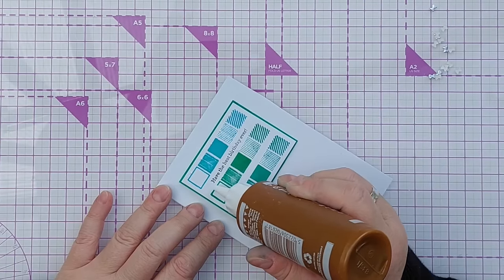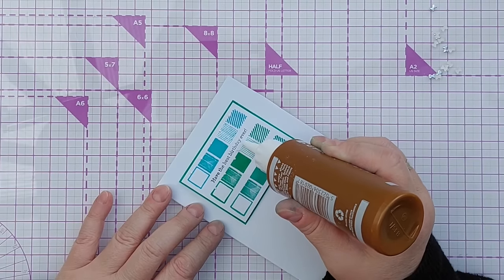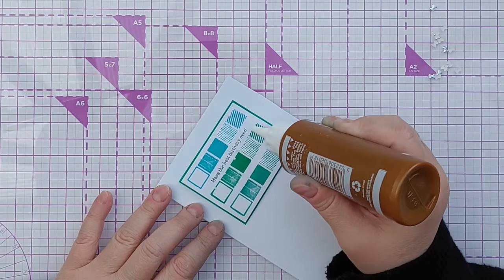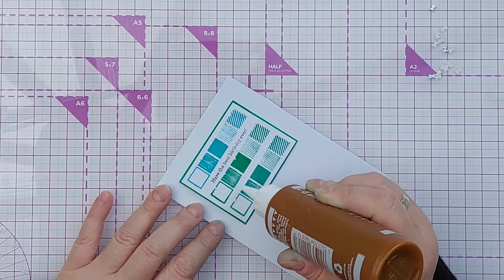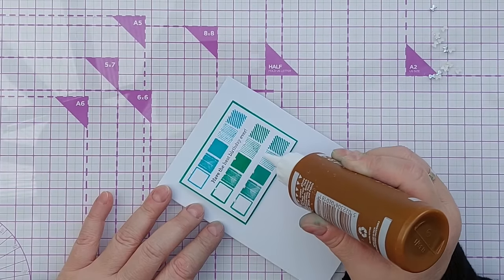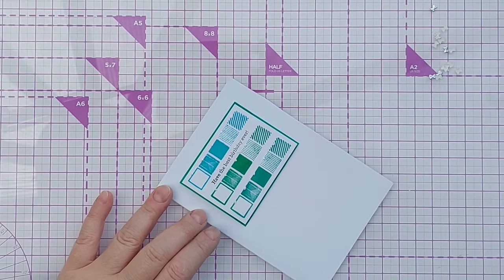If I've counted correctly, I should have managed to cut 15 little silver bows. So I'm going to put a tiny little dot of glue in the middle top of each of these squares ready to receive a bow.